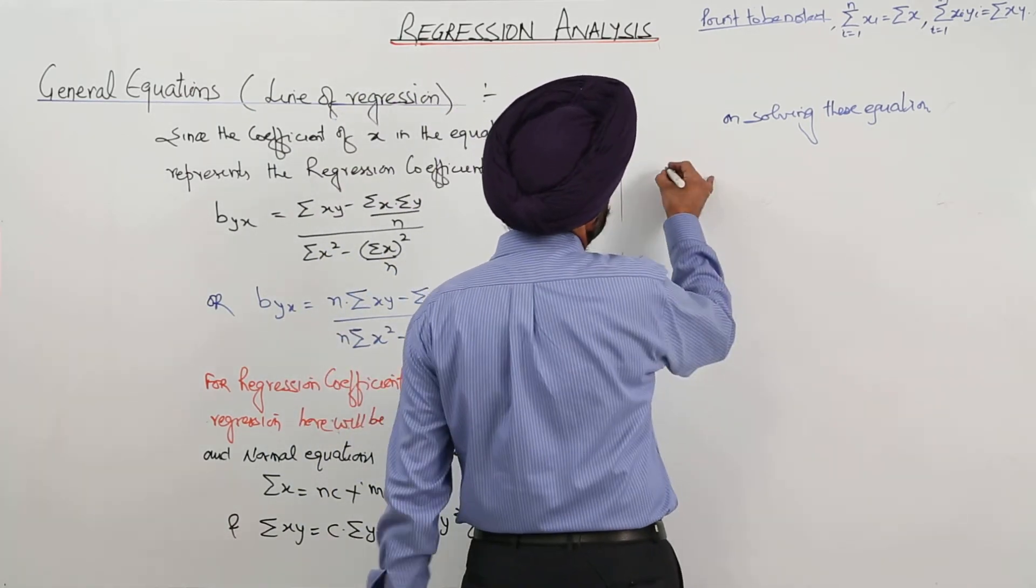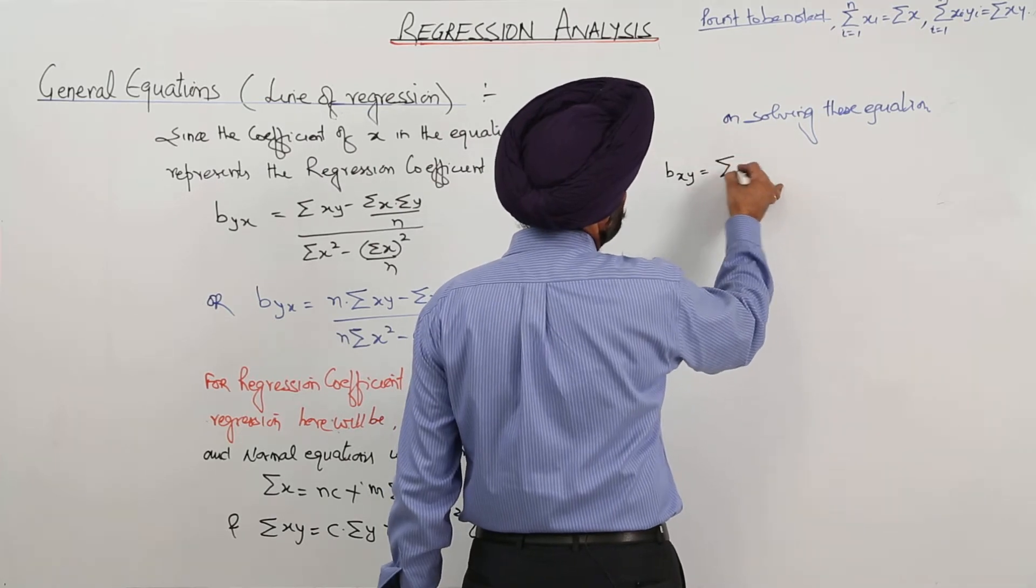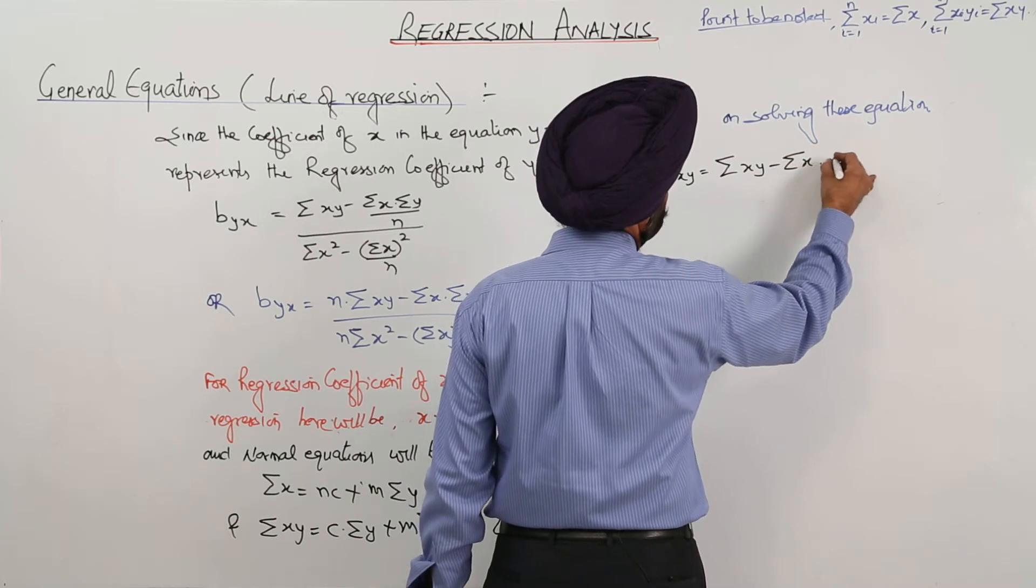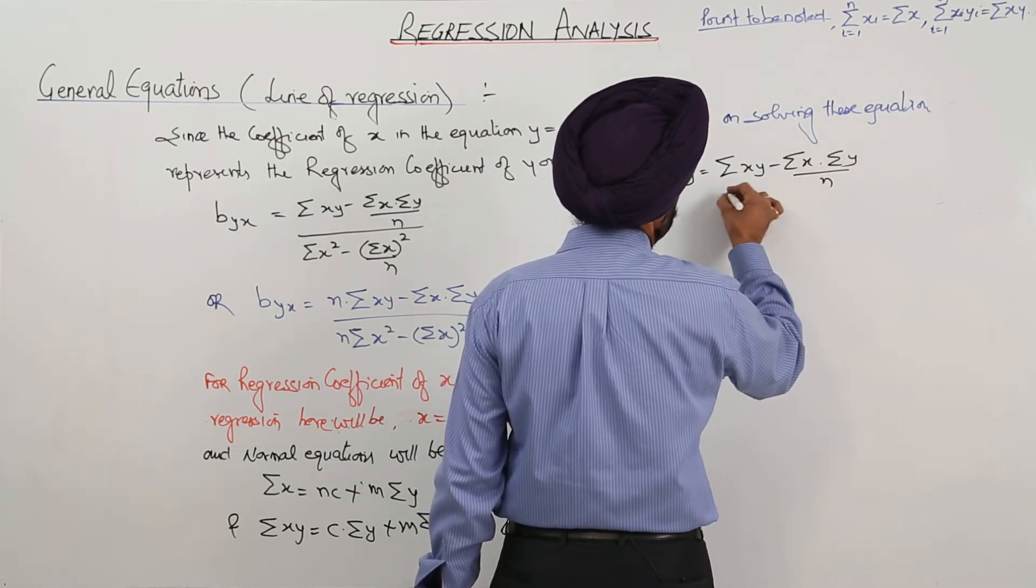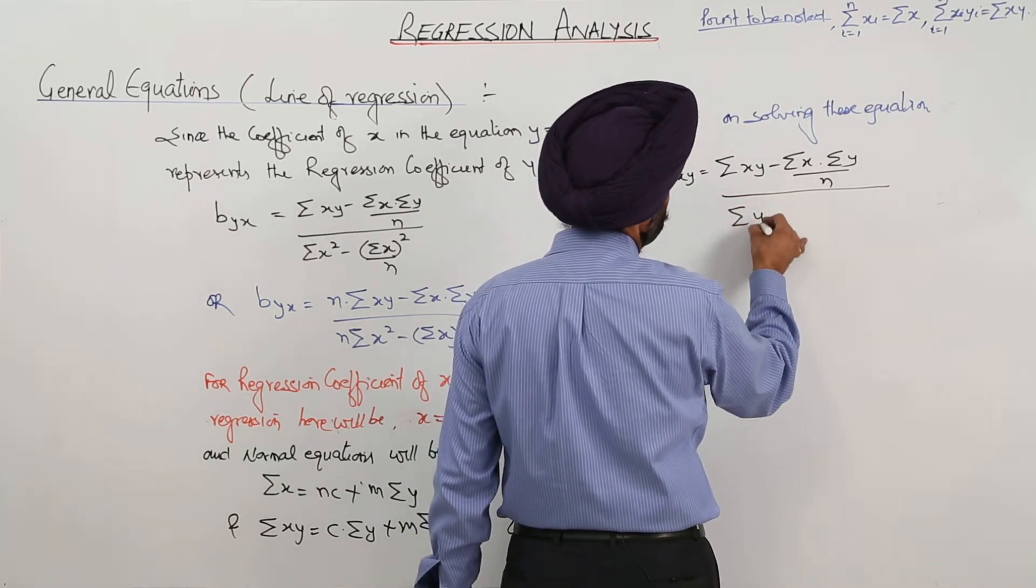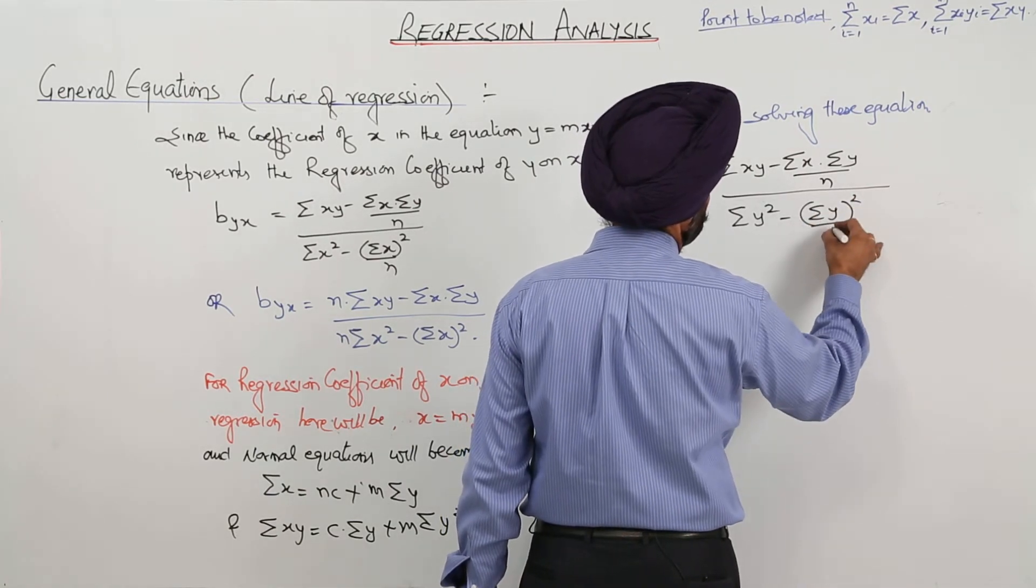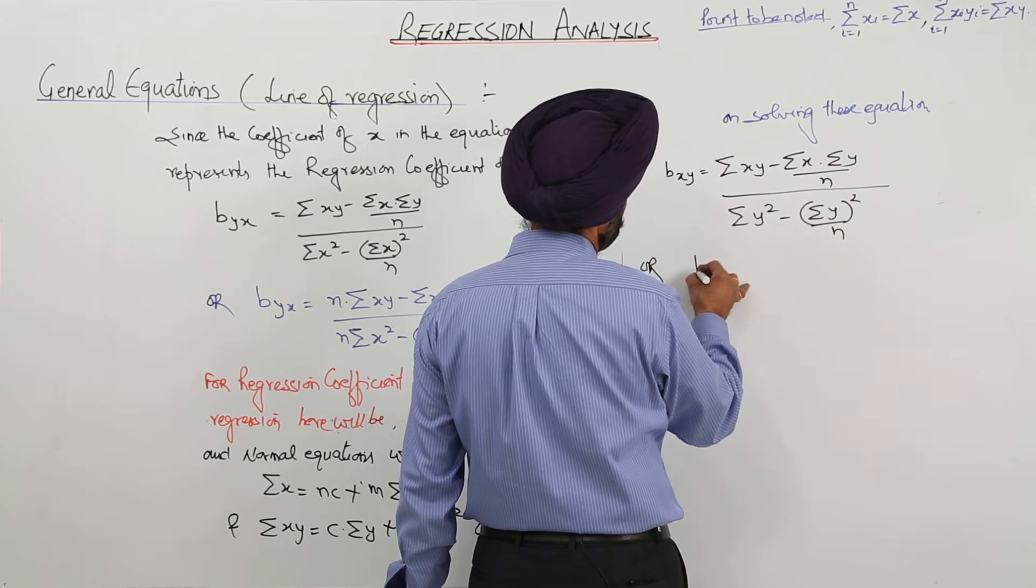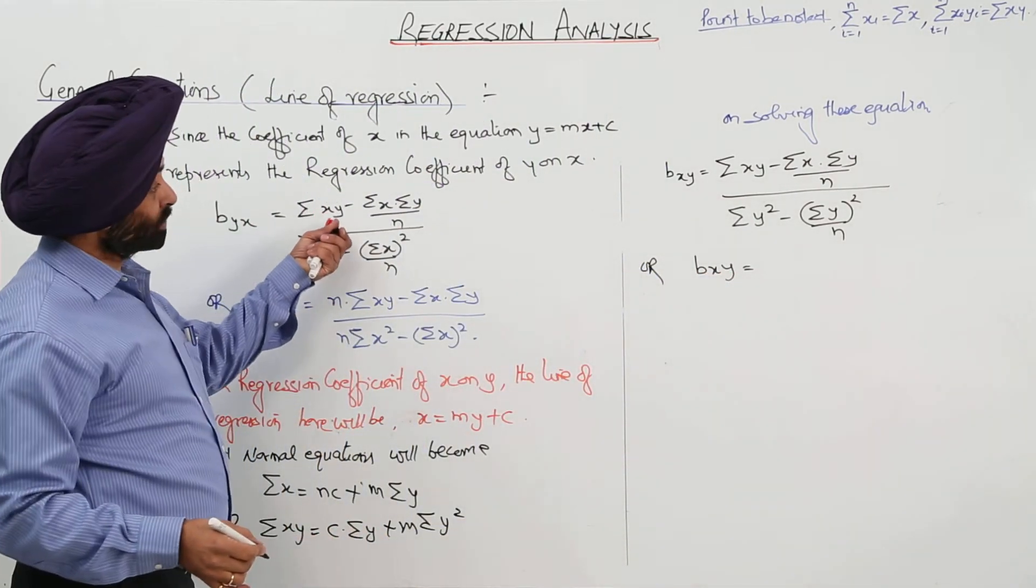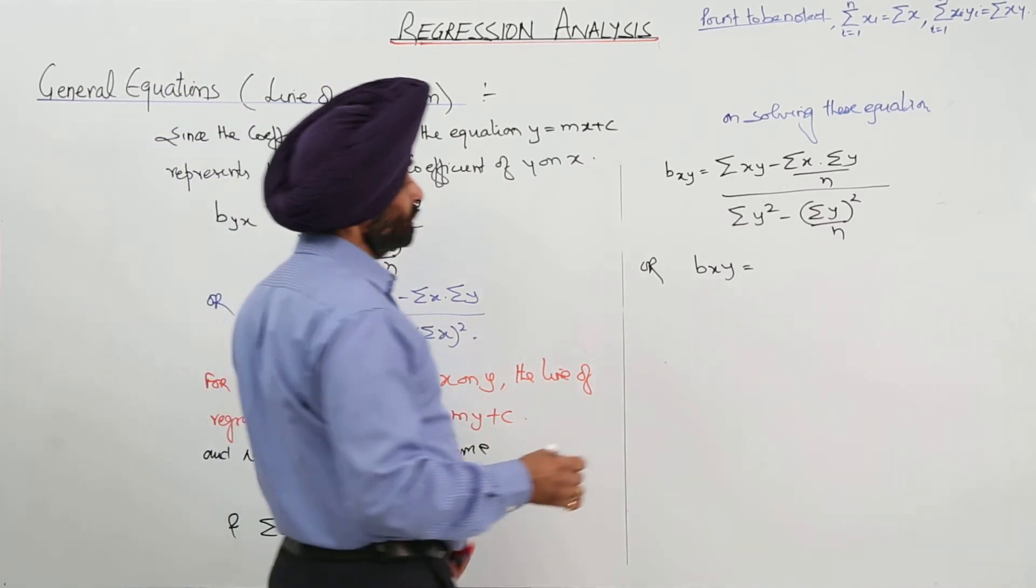So b x y, this will be now summation of x y minus summation of x times summation of y upon n, on the whole it will be summation of y square minus summation of y whole square upon n. Or one and the same thing, just look here, x y only difference is here, here and here, here and here, both sides.